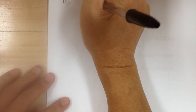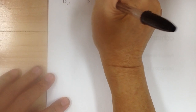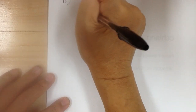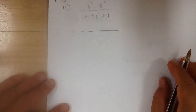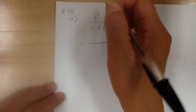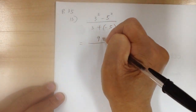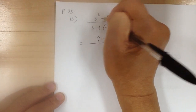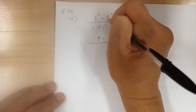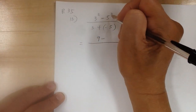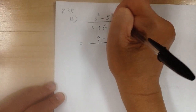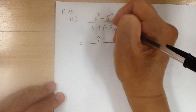Number 13: we have 3 squared minus 5 squared divided by 3 plus negative 5. This is a grouping symbol, so you have a top group and a bottom group. I'm going to do the top group first. 3 squared is 9 minus — now notice there's no parentheses, so the squared is only for the 5. The exponent is only for what is immediately before it, so this is only for the 5, not for the negative.